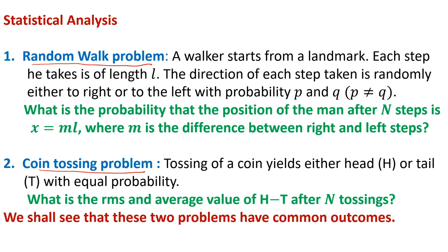We ask: what is the probability that the position of the man after N steps is x = mL, where M denotes the difference between right and left steps taken? For the coin tossing problem, tossing a coin yields either head or tail with equal probability (one half). We ask for the RMS and average values of H minus T after N tossings.